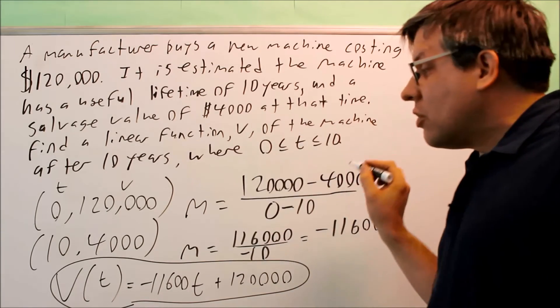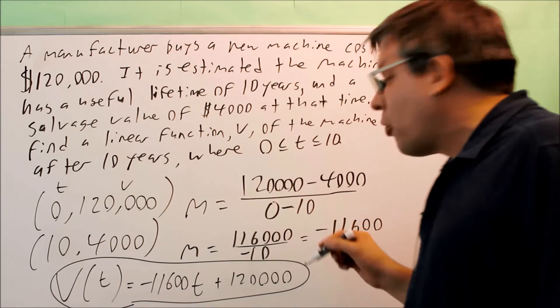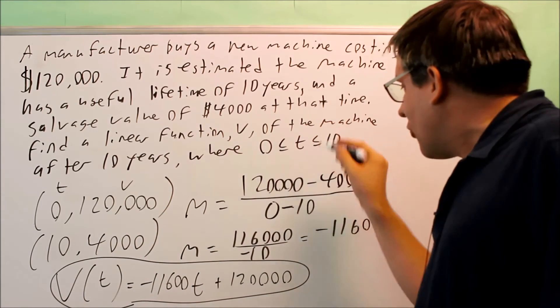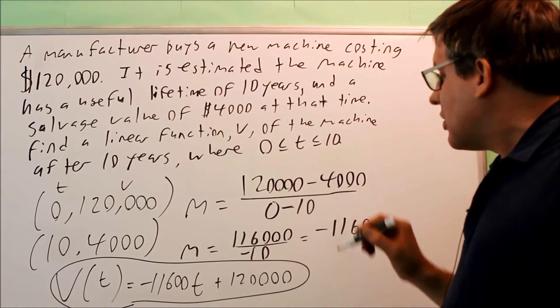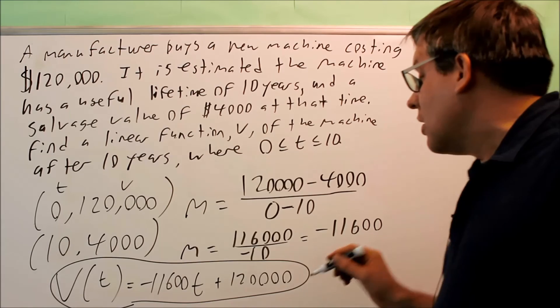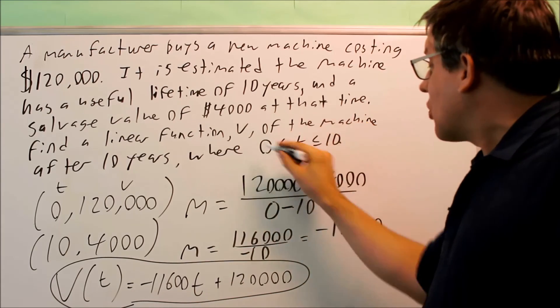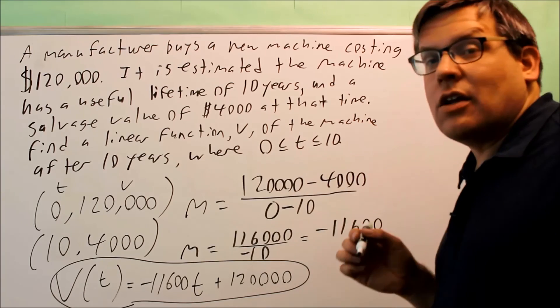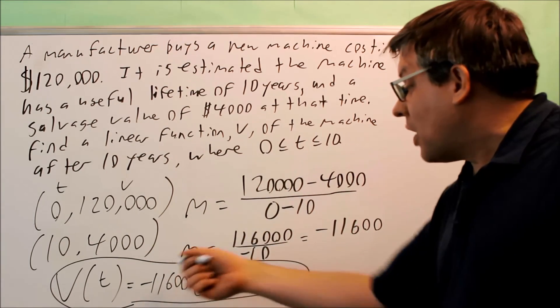This right here, you don't have to do anything with this with your formula. All that's telling you is that this particular formula we came up with only works if my value is between 0 and 10. If I put values in more than 10, then what happens is I start getting negative values. The machine's worth a negative amount. So it's saying that as long as my t is between 0 and 10, that means I'll get a positive amount for the value of this, my V of t.